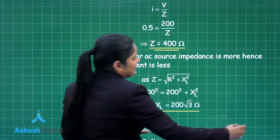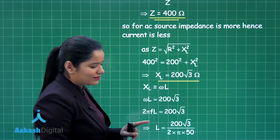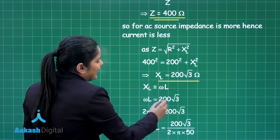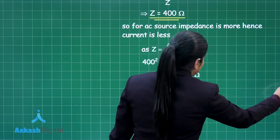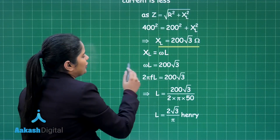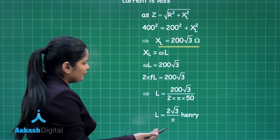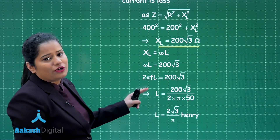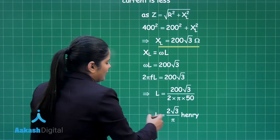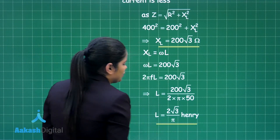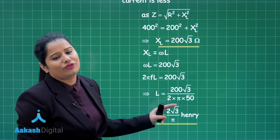X_L is the product of the angular frequency omega and the inductance L. From this we can calculate the inductance using the formula, where omega = 2πf and the frequency of the AC source is given as 50 hertz. The inductance comes out to be 2√3/π henry.